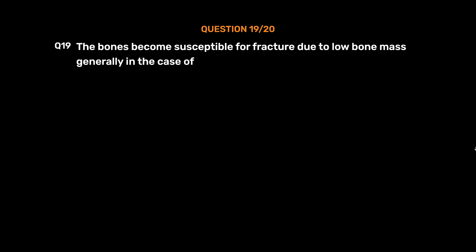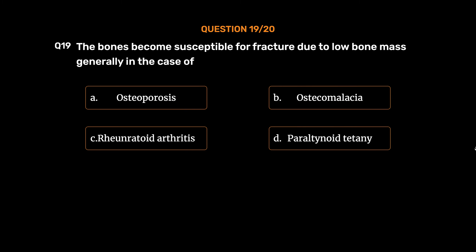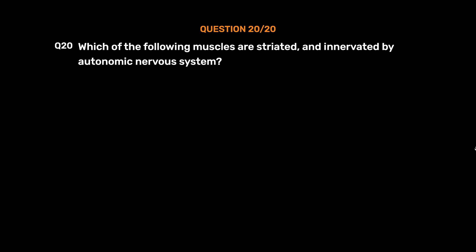Question No. 19. The bones become susceptible to fracture due to low bone mass, generally in the case of: Option A. Osteoporosis, Option B. Osteomalacia, Option C. Rheumatoid arthritis, Option D. Peraltonoid detainee. The correct answer is Option A, Osteoporosis.